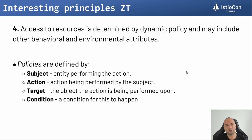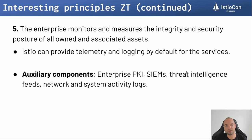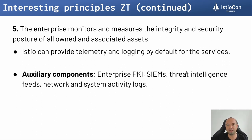How do you define these attributes? They are defined by policies, and policies have four traits. First is the subject — the entity performing the action. Second is the action — the action being performed by the subject. Third is the target — the object upon which the action is performed. Fourth is the condition — for the policies to be applied, a condition needs to happen. Another interesting zero trust principle is that the enterprise monitors and measures the integrity and security posture of all owned and associated assets. Istio can provide telemetry and logging by default for all the services inside the mesh. That's how Istio and zero trust start to make sense together.